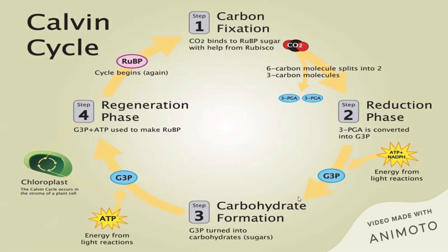The other three-carbon compound combines with ATP to form ribulose bisphosphate, the five-carbon sugar, which is used to regenerate and continue the cycle. It is important that this regeneration occurs for the continuation of the cycle, as the cycle must be sustained.